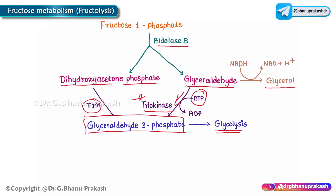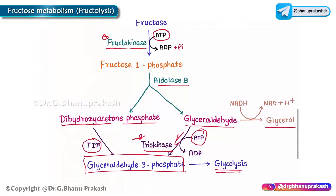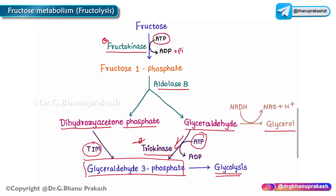The glyceraldehyde-3-phosphate produced enters into glycolysis. This is how fructose is metabolized by two important enzymes: fructokinase and aldolase B, finally producing glyceraldehyde-3-phosphate which enters glycolysis.